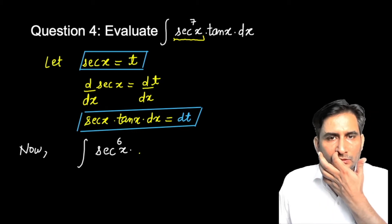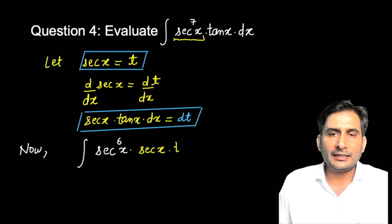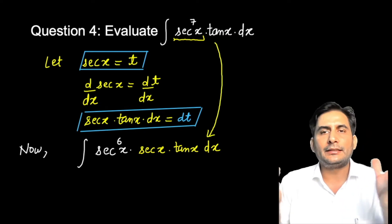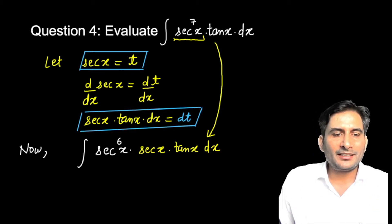Sec^7(x) can be written as sec(x) times sec^6(x), right? Tan(x) is also there as it is, and dx is also as it is. See, I've written everything as it is from here - sec^7 is the only thing I've changed. Now look at these two expressions I've written - compare this one and this one.